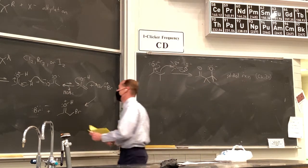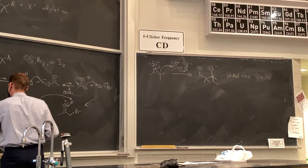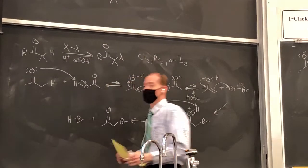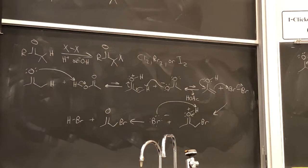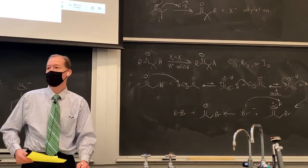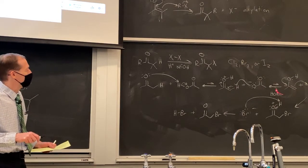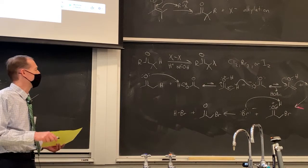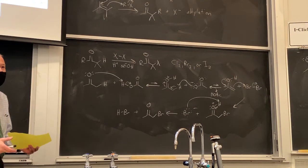Once we reach the oxonium ion intermediate, bromide can deprotonate the carbonyl and give us our alpha-bromo ketone. HBr is generated as a byproduct in this reaction. Remember, we'll have less than 1% of the enol present — this equilibrium strongly favors the ketone — but that 1% reacts irreversibly with the halogen, so we can use Le Chatelier's principle to drive the reaction to completion.